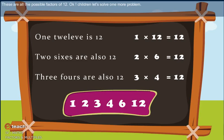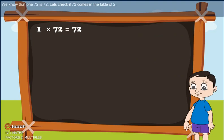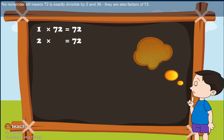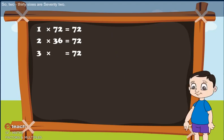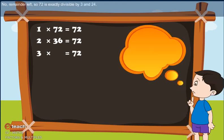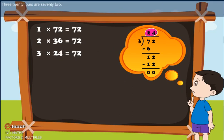Let's solve one more problem. We know that 1 times 72 is 72. Let's check if 72 comes in the table of 2. No remainder is left, which means 72 is exactly divided by 2, and 36 is also a factor of 72. So 2 times 36 gives 72. Now we will check the table of 3. No remainder left, so 72 is exactly divided by 3 and 24. So 3 times 24 gives 72.